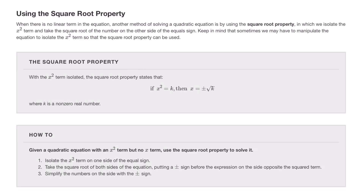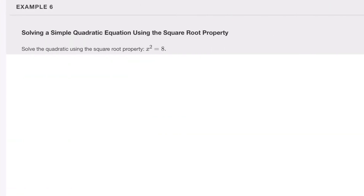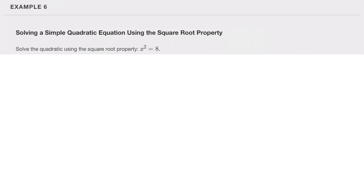Using the square root property — when there is no linear term in the equation, another method is using the square root property, where we isolate the x² term and take the square root of the number on the other side. The square root property states: if x² equals k, then x equals plus or minus the square root of k, where k is a non-zero real number. For example, starting with x² equals 8: taking the square root on both sides, x equals plus or minus the square root of 8.